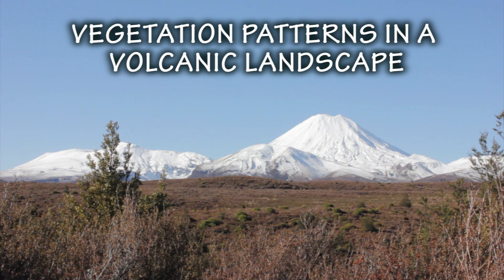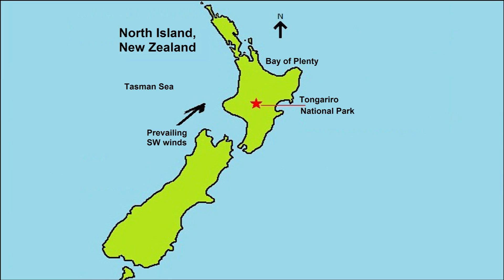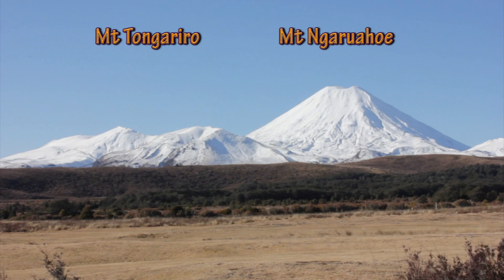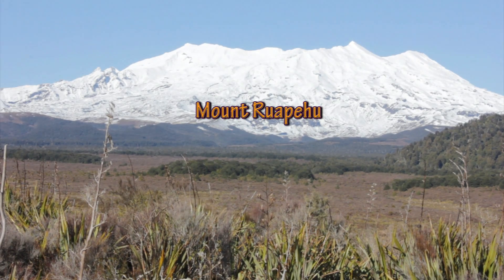Today we are looking at the spatial variations of vegetation that exists in a volcanic landscape. Our case study is the magnificent landscape of the Tongariro National Park in New Zealand. This landscape has numerous volcanoes including Mount Tongariro, Mount Neerahaui, and Mount Ruapehu.